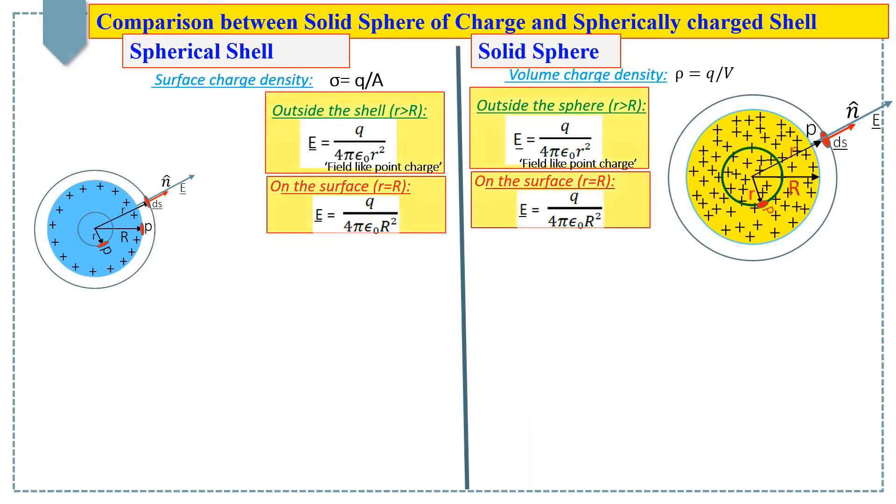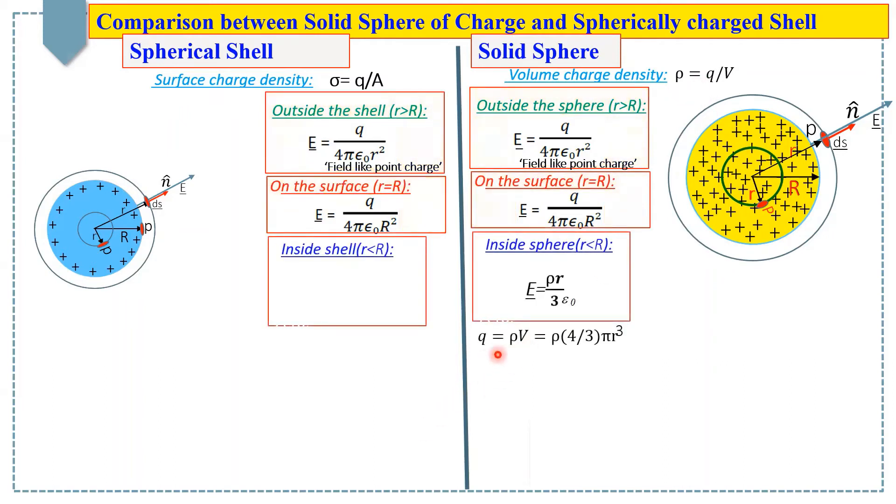Now, to find the electric field inside the sphere, we draw a Gaussian sphere of radius r less than the radius of the sphere. The charge inside our Gaussian surface is q equals rho v, where v is the volume of the Gaussian sphere.